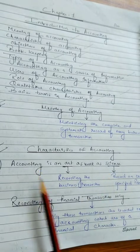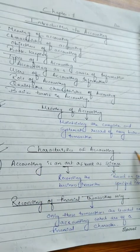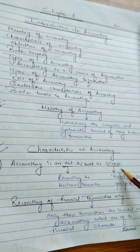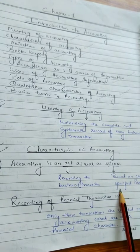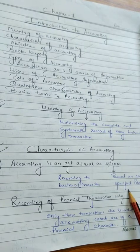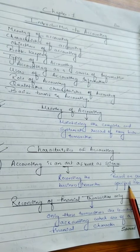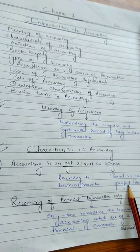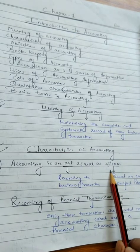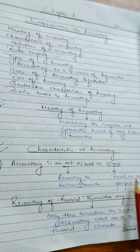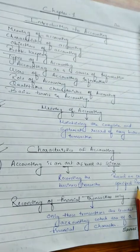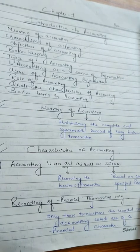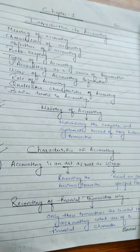How is accounting a science? Science is a systematic body of knowledge based on certain specified principles. Science kya hai? Ek systematic body of knowledge hai jo scientific principles pe based hai. Similarly, accounting is also a science because it is based on specified accounting principles and accounting standards. Accounting principles and accounting standards we will learn in the further chapter.